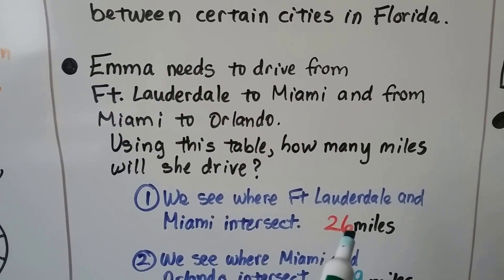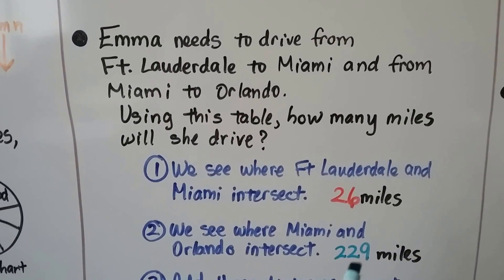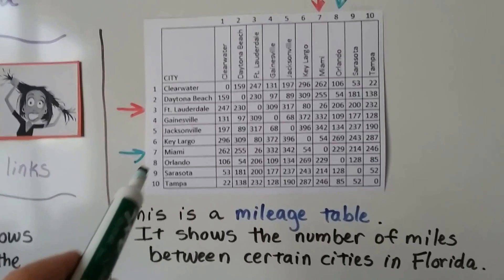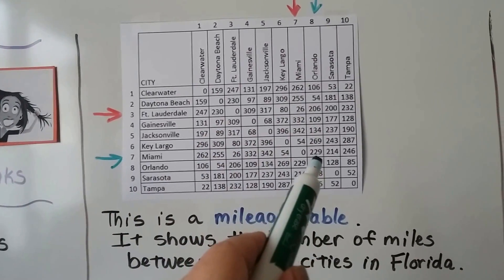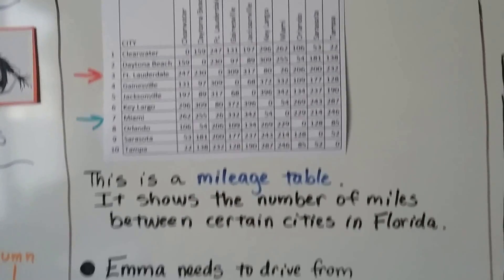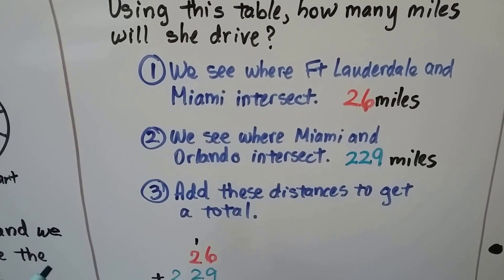So that's 26 miles. Now we see where Miami and Orlando intersect. It's going to be 229. So here's Miami, and here's Orlando. And where they intersect is 229.